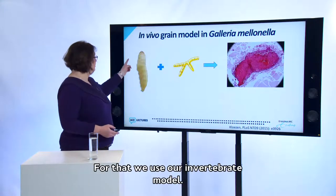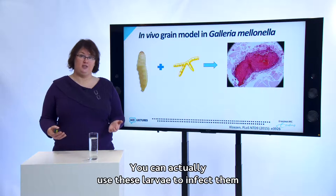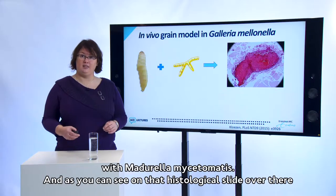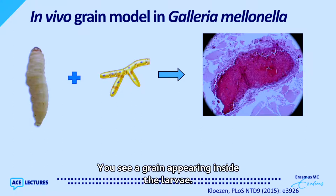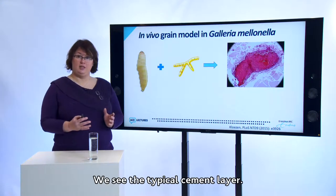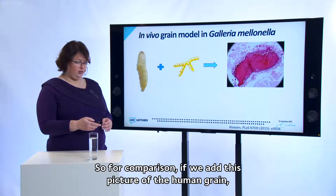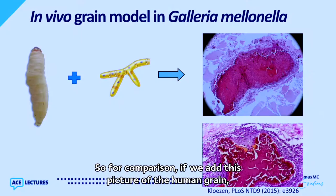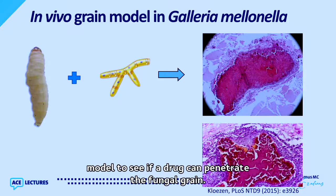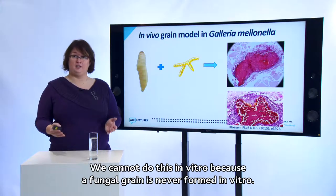For the grain penetration question, we use an invertebrate model — the larvae of the greater wax moth Galleria mellonella. These larvae can be infected with Madurella mycetomatis, and histological slides show a grain appearing inside with a typical cement layer, host cells, and even a collagen-like layer. When compared side by side with a human grain, it looks very similar, making it a good model to test if a drug can penetrate the fungal grain — something that cannot be done in vitro since fungal grains never form in vitro.